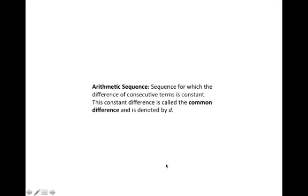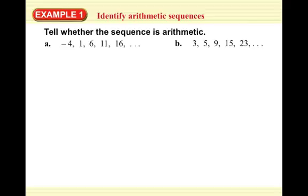An arithmetic sequence is a sequence for which the difference of consecutive terms is constant. You're adding the same thing from one term to the next, and this constant difference is called the common difference and is denoted by d.